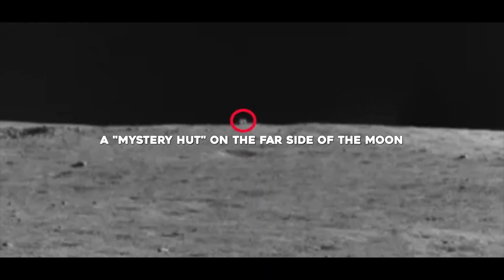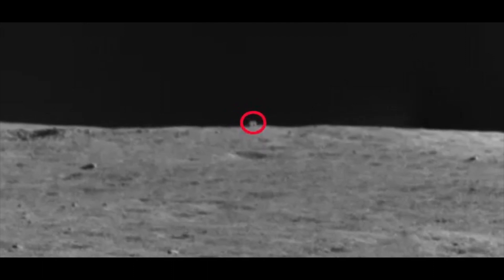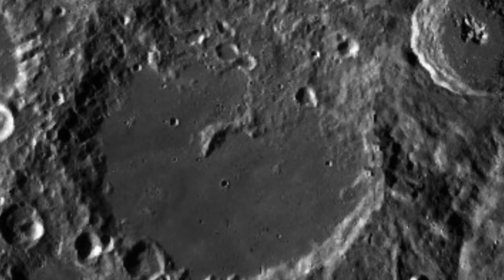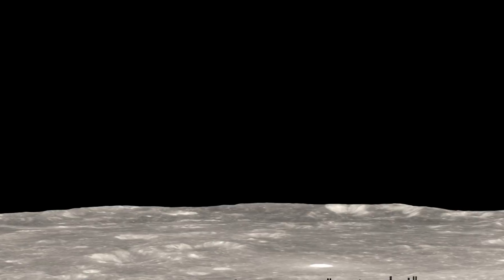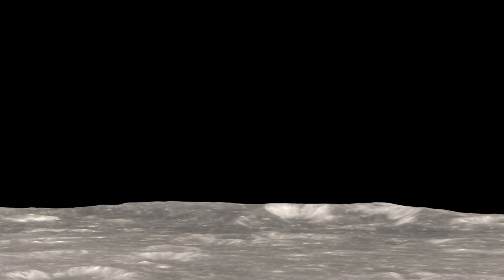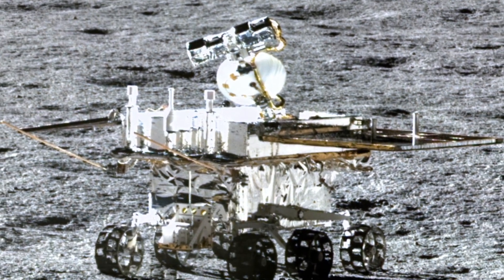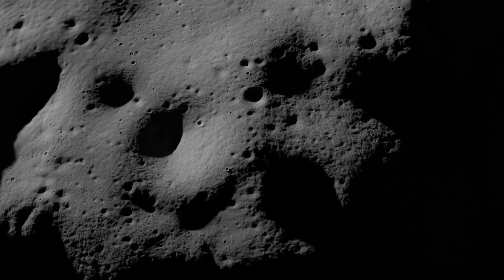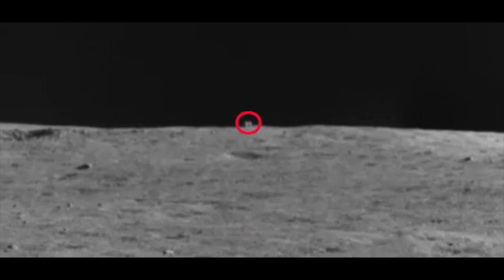A mystery hut on the far side of the Moon. Finally, for an object much closer to home than any of the others described last year, how about a mysterious hut standing proudly on the far side of the Moon? China's Yutu-2 rover spotted the cube-shaped anomaly on October 29, 2021, with the object protruding just above an otherwise uniform horizon. So, is it an alien obelisk, à la Stanley Kubrick's 2001: A Space Odyssey? Or is it something far more boring, like one of the Moon's many boulders?